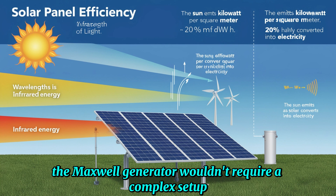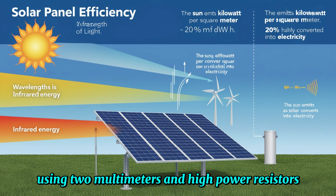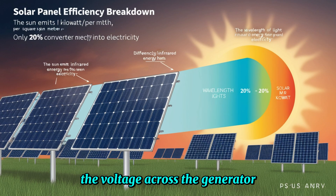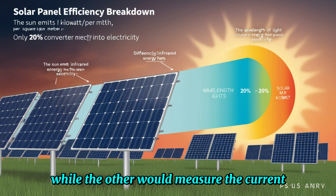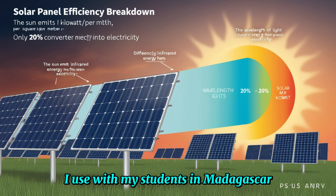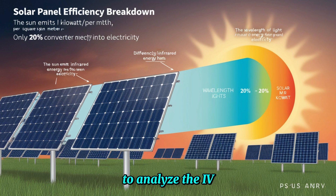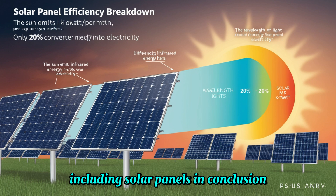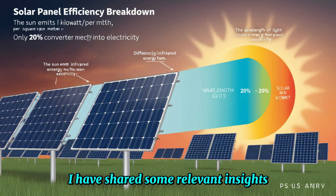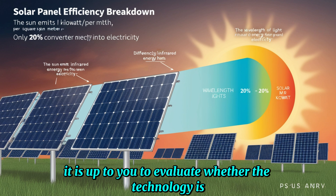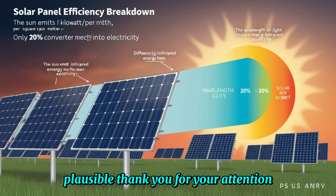Testing the Maxwell generator wouldn't require a complex setup. A simple experiment using two multimeters and high-power resistors would suffice. One multimeter would measure the voltage across the generator, while the other would measure the current flowing through different resistors. This is a common method I use with my students in Madagascar to analyze the IV characteristics of various energy sources, including solar panels. In conclusion, I have shared some relevant insights regarding this invention. Ultimately, it is up to you to evaluate whether the technology is plausible. Thank you for your attention.